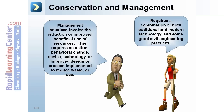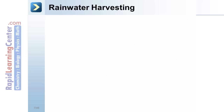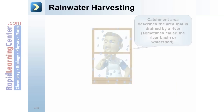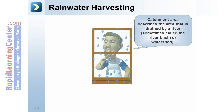Some good civil engineering practices support rainwater harvesting. A catchment area describes the area that is drained by a river, sometimes called the river basin or watershed.